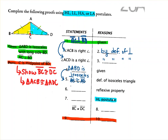Now we need to find legs that are congruent for the hypotenuse-leg postulate. These two smaller triangles share the leg AC. By the reflexive property, AC is congruent to AC — a thing is congruent to itself. Let's stop and note: the whole purpose of these first three lines in our proof was to show that we have right triangles, which is necessary before we can invoke one of these postulates as a reason.